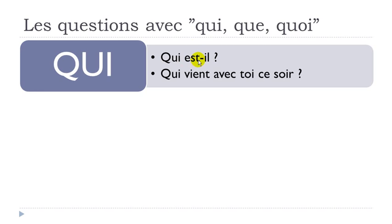Or then, let's see another example here. QUI VIENT? VIENT is from VENIR, which means to come. So QUI VIENT AVEC TOI CE SOIR? — Who is coming with you this evening?